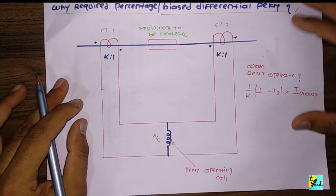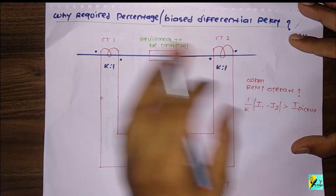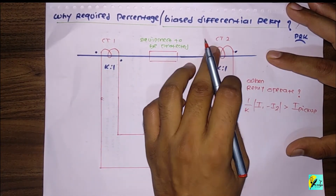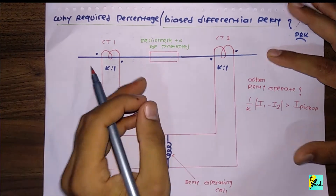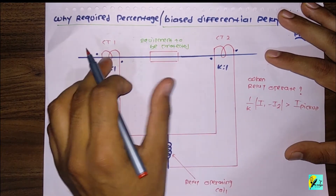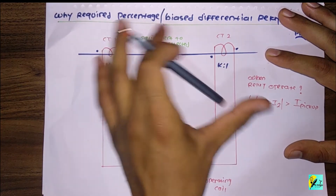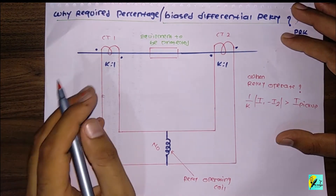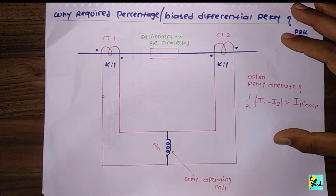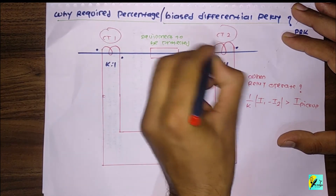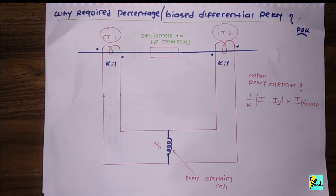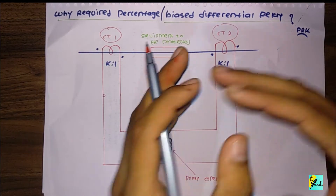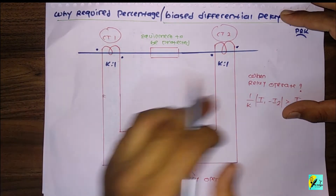We have already seen the differential relay and the working of CT1 and CT2. In this particular section between CT1 and CT2 is the equipment to be protected. One factor that should be considered is that the ratio of CT1 and CT2 should be identical in nature. If these two transformation ratios are not equal, then the secondary currents will not be equal.